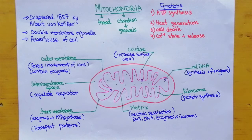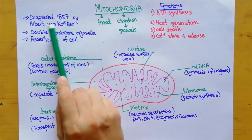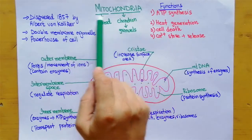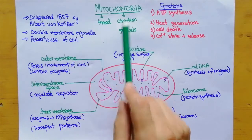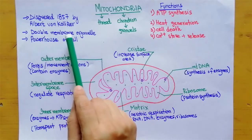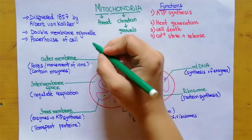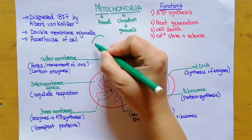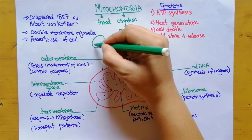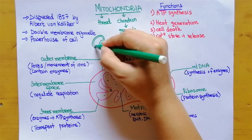Mitochondria was first discovered in 1856 by Albert von Colliker. Mitochondria is a double membrane-bounded organelle, meaning it consists of two membranes: the outer membrane and the inner membrane.